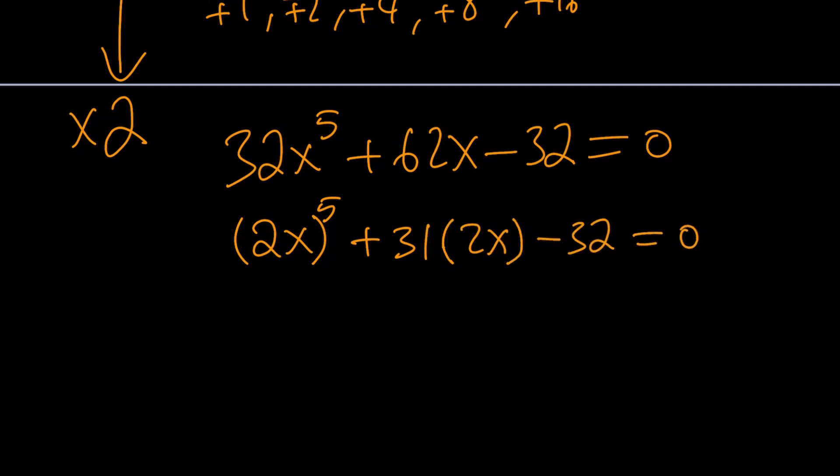And then, following the same plan, we can just write this as 31 times 2X. And then, use substitution. This is what's going to make our polynomial monic. So, let's call this T. This is going to be T to the 5th plus 31T minus 32.